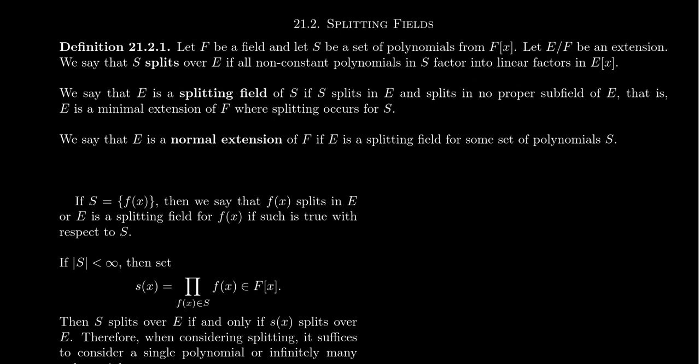We say that E is a splitting field for the set of polynomials S if S splits in the field extension E, and—this is the important part—it splits in no proper subfield of E. In other words, E is a minimal extension of F where S splits. This minimality is very important. Many students sometimes ignore this and say E is a splitting field because S splits over E, but to be a splitting field you have to be a minimal extension in that regard.